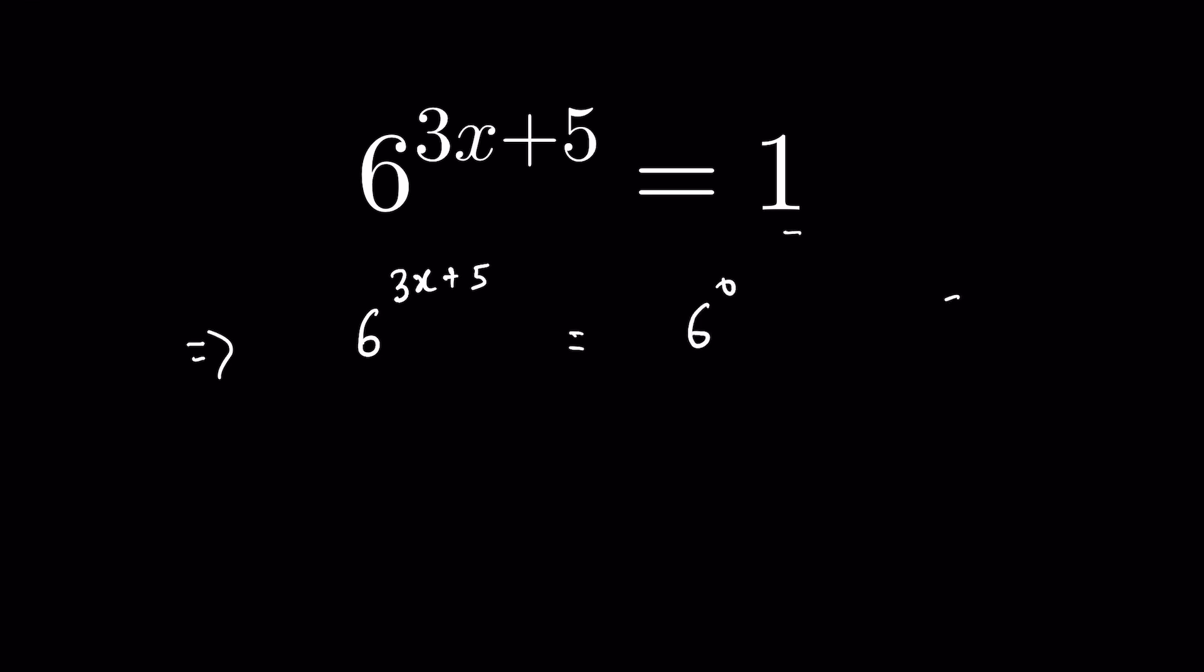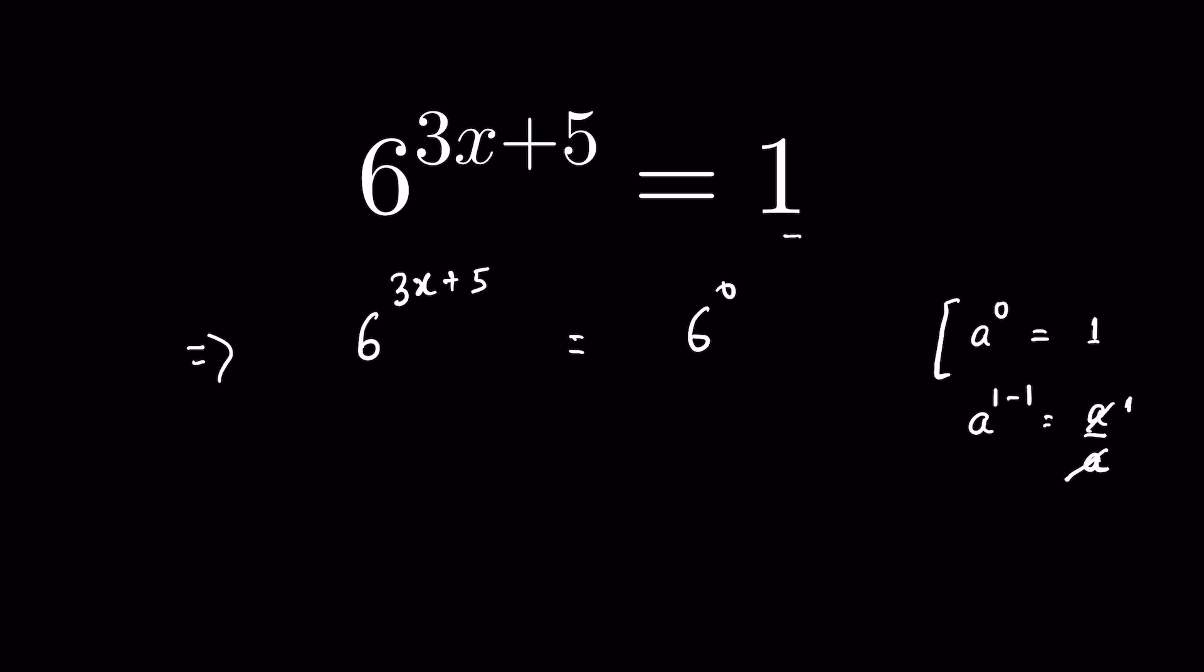Because when a is raised to the power 0, the value is 1. How? If you write 0 as a raised to the power of 1 minus 1, then it is a raised to the power 1 minus 1, which means a upon a. So when you cancel it out, the answer is 1. So base raised to the power 0 is 1. So 1 we can replace it with 6 raised to the power 0.